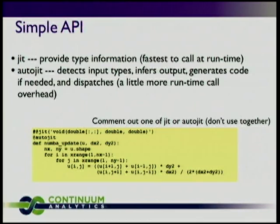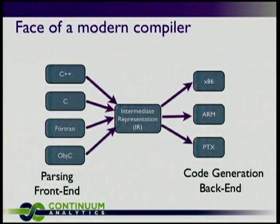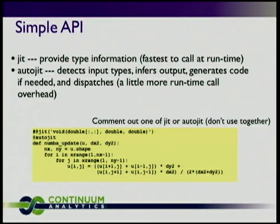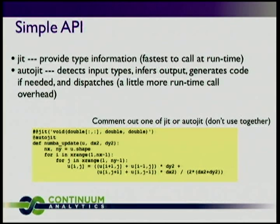Numba's API is actually pretty simple. The discussion was to help you understand that you can produce machine code from Python — it's not hard, it can be done today, and it makes really fast code quickly if you use type containers. The simple API is just two decorators: JIT and AutoJIT. JIT allows more control and is fastest at runtime because it produces a native function pointer plus a Python wrapper, so you can call it just as if you'd written a C extension. You have to tell it the argument types, though return type can be inferred.